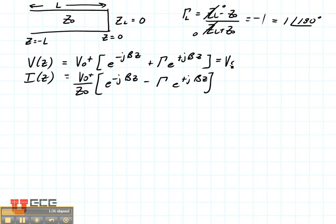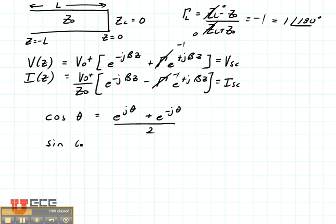Now let's consider this special case when we have a short circuited transmission line. For a short circuited transmission line, the reflection coefficient is minus one. Now look at each one of these. This is the sum of an E to the J term and another similar E to the minus J term. This looks a lot like the cosines and sines that we've learned about in math. The cosine is E to the J theta plus E to the minus J theta divided by 2. And the sine of theta is equal to the E to the J theta minus E to the minus J theta over 2J.